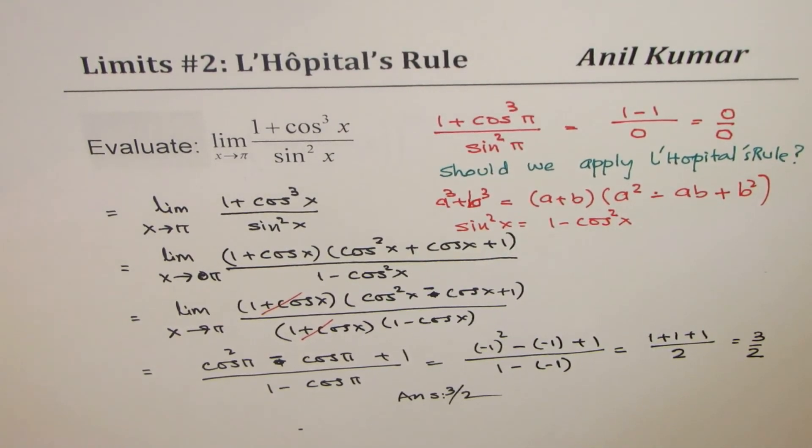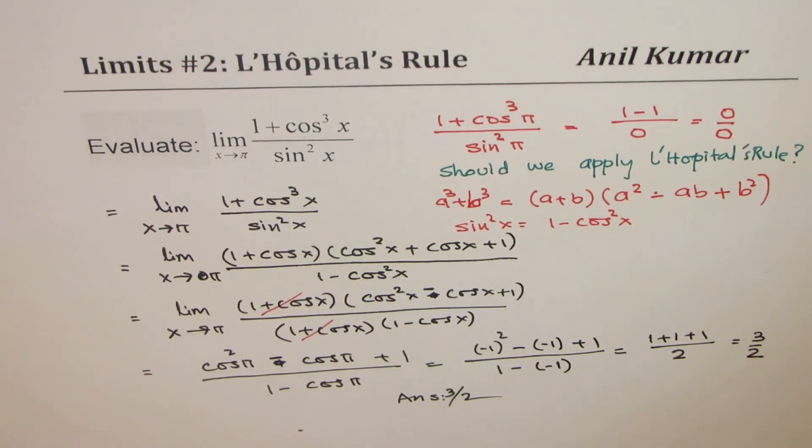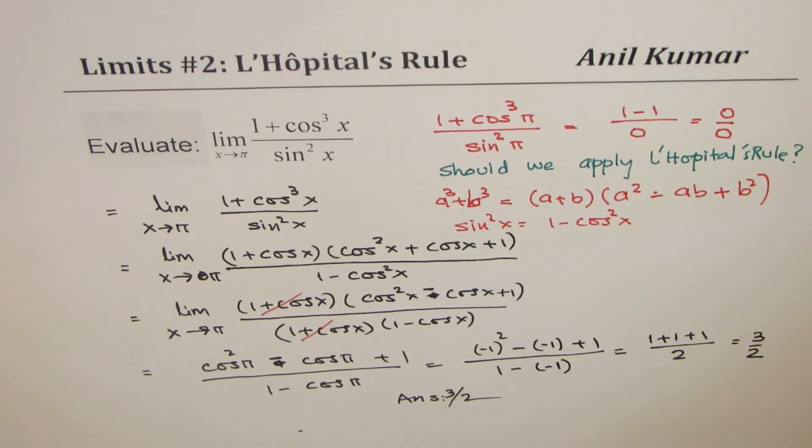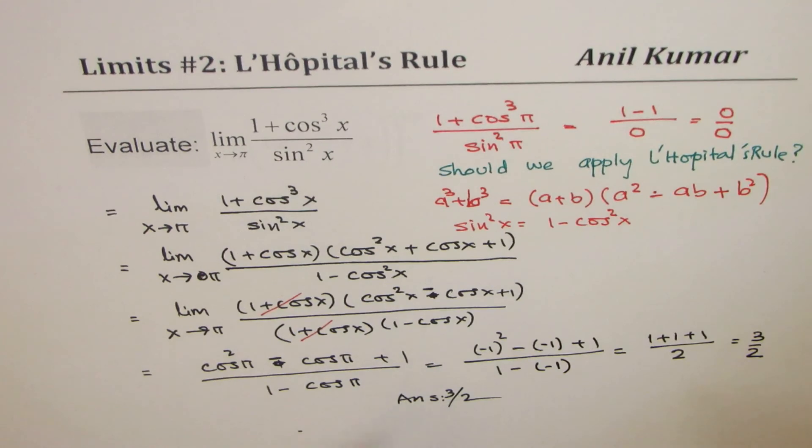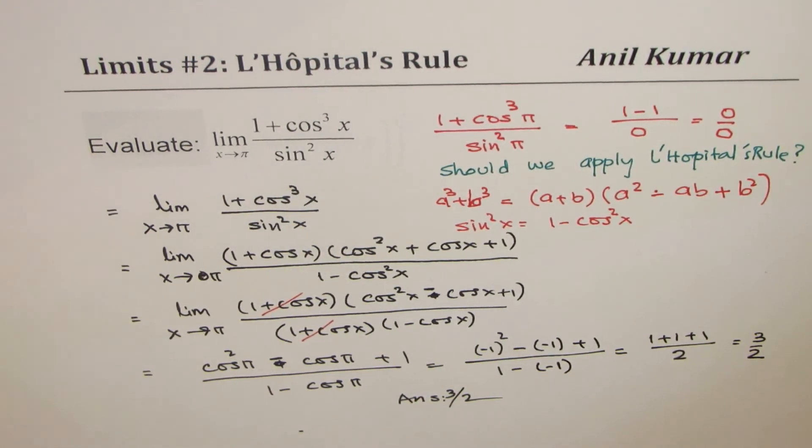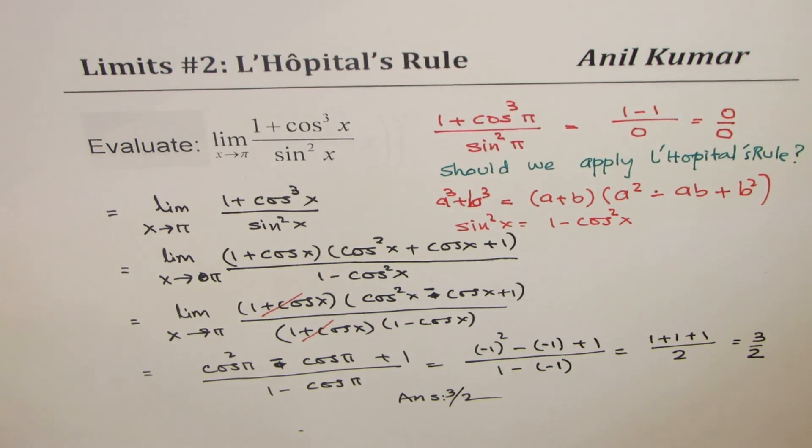There is no point using L'Hôpital's rule. Basically there is no point finding the derivatives of numerator and denominator when you can do it by simple factoring of the trigonometric functions.